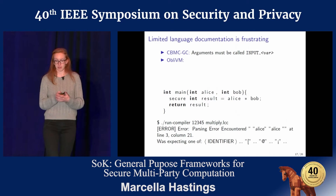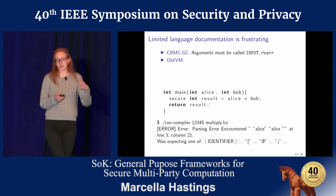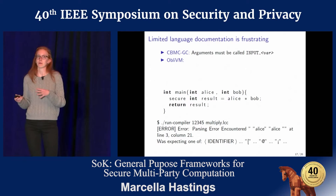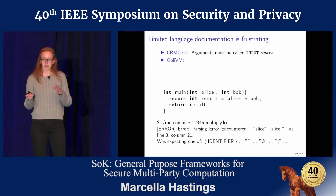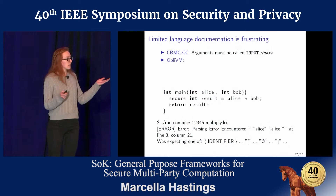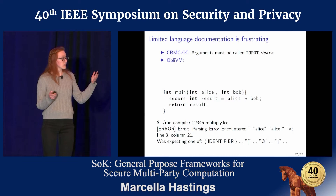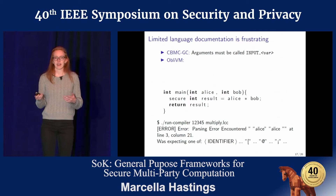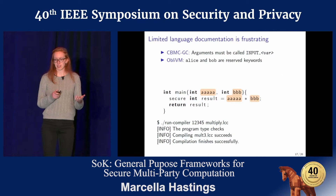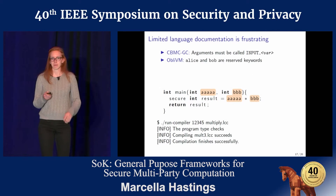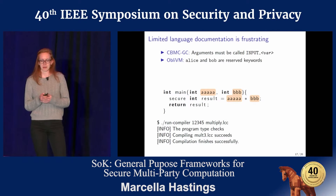Another example is from Oblivium, an end-to-end framework that consumes a Java-like language. Again, we have our program to multiply two numbers together and it encounters a parsing error. It turns out that 'Alice' and 'Bob' are reserved keywords in the language, so you can't use them as variable names.